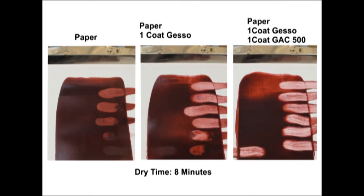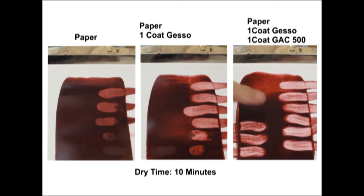Using the finger swipe test, we can see the impact of surface absorbency. The sealed paper with gesso and acrylic medium delivered three times as much working time when compared to the uncoated paper.